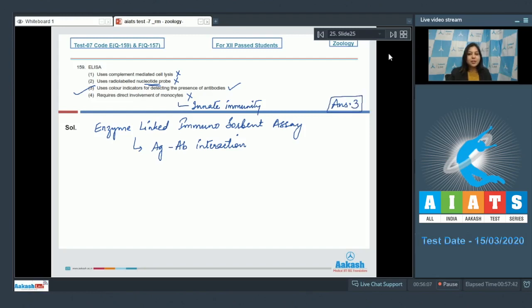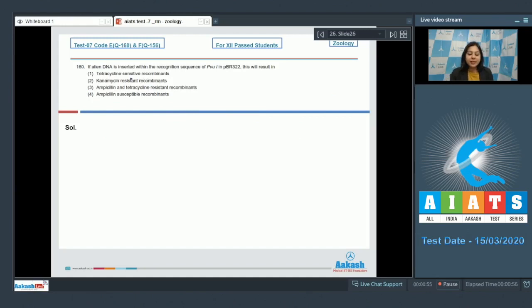Proceeding to the next question students, question number 160: If alien DNA is inserted within the recognition sequence of PVU1 in PBR322, this will result in. So PVU1 is a recognition site for restriction endonuclease which is present in the ampicillin resistance gene of PBR322.